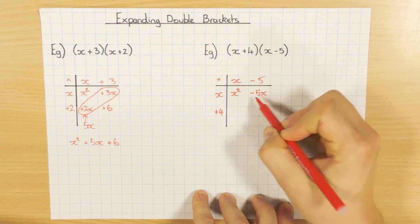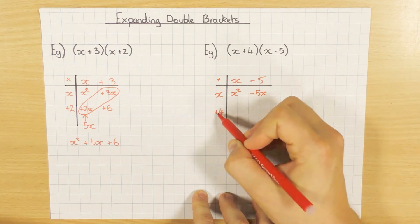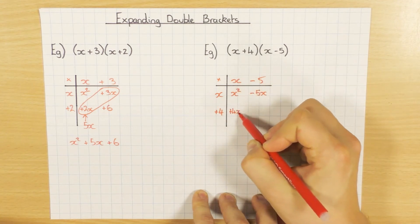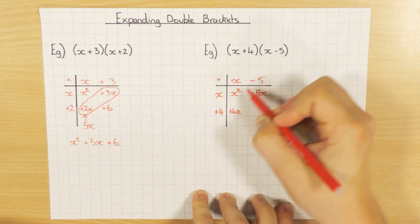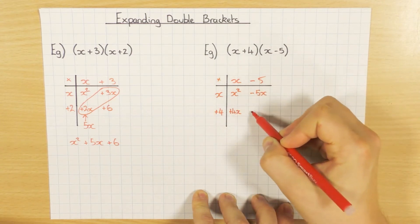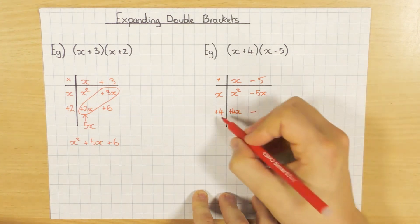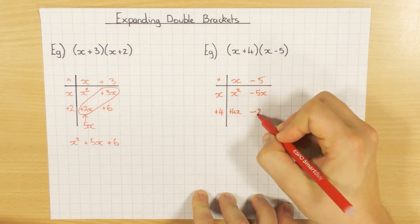And again we are timesing, so x times x is x squared, x times minus 5 is minus 5x. This time I put my minus in there to show it's a negative. And 4 times x is 4x, positive 4x. And 4 times minus 5, so they are different signs, one's positive one's negative, which means my answer will be negative and 4 times 5 is 20.